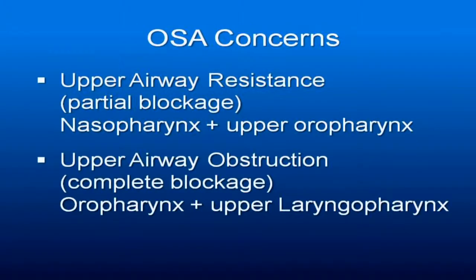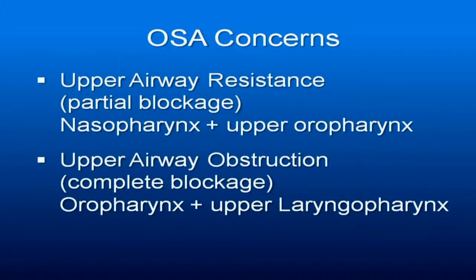The reason these become important is because upper airway resistance mainly occurs in the mesopharynx and the upper oropharynx — that's a partial blockage, with tonsils and adenoids restricting the inflow of air. Upper airway obstruction — actual blockage — usually occurs more in the oropharynx and the upper laryngopharynx.